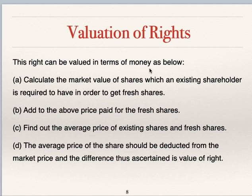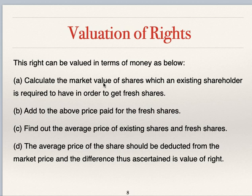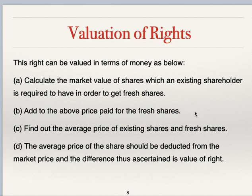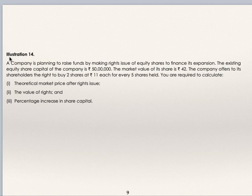This right can be valued in terms of money. To calculate valuation of right: first, calculate the market value of existing shares — existing shares multiplied by market value per share. Then add the price paid for fresh shares: number of right shares offered multiplied by price per right share. Find the average of these two; market price minus this average is the valuation of right.